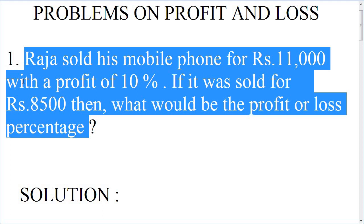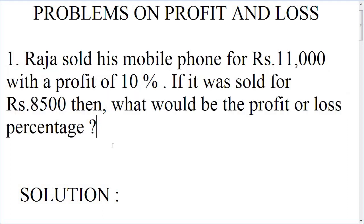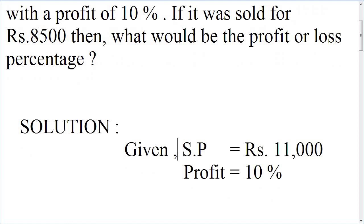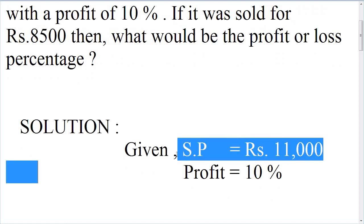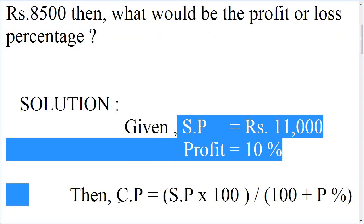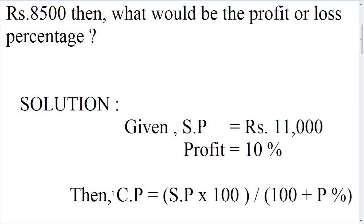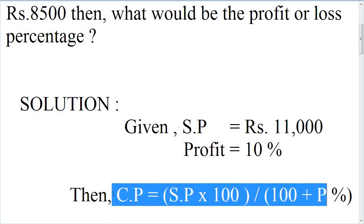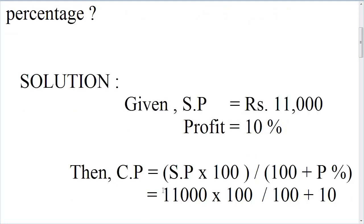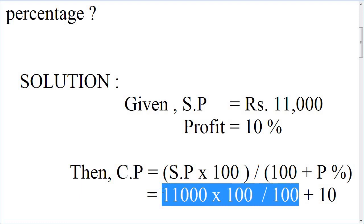In this question, we need to find the cost price. We'll use the special formula: Cost Price (CP) = Selling Price × 100 divided by (100 + profit percentage). So CP = 11,000 × 100 divided by (100 + 10).